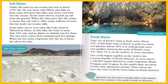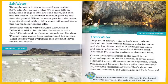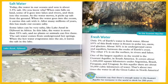Salt Water. Today, the water in our oceans and seas is about 3.5% salt. Do you know why? When rain falls on land, some of it goes into lakes and rivers, and then into the oceans. As the water moves, it picks up salt from the ground. When the water goes into the ocean, it carries this salt with it. After many millions of years, this has made our oceans salty.